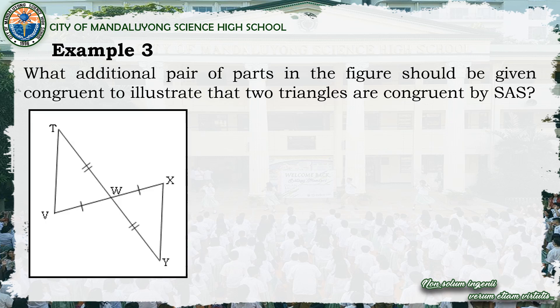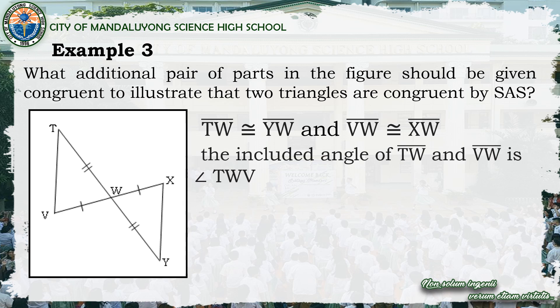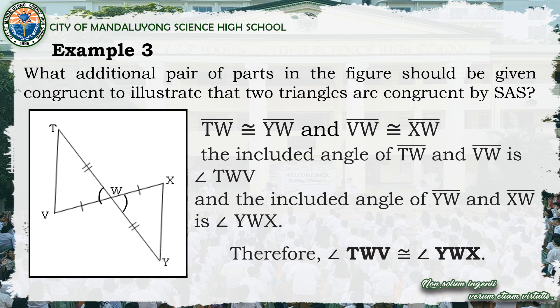Example number three: what additional pair of parts should be given congruent to illustrate that the two triangles are congruent by SAS? We have triangle TWV and triangle YWX. Side TW is congruent to side YW, and side VW is congruent to side XW. The included angle of TW and VW is angle TWV, while the included angle of YW and XW is angle YWX. Since these are vertical angles, by the vertical angle theorem, angle TWV is congruent to angle YWX — that is the additional pair needed.